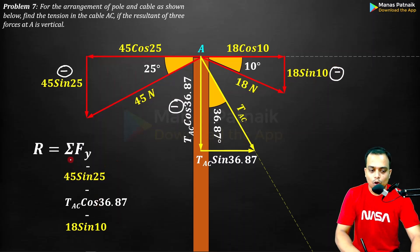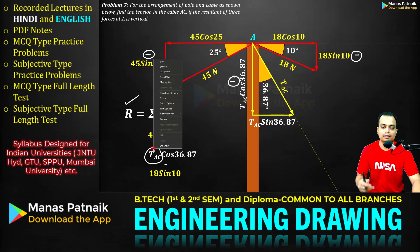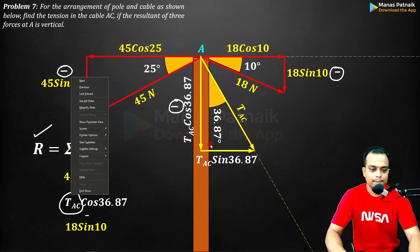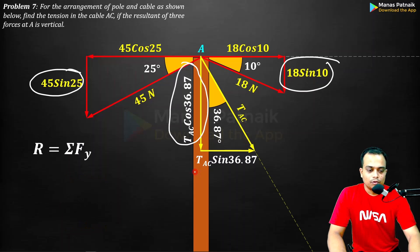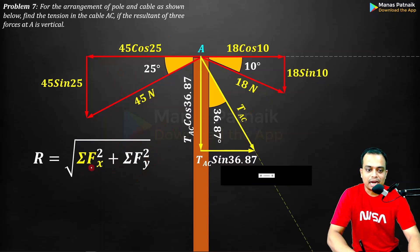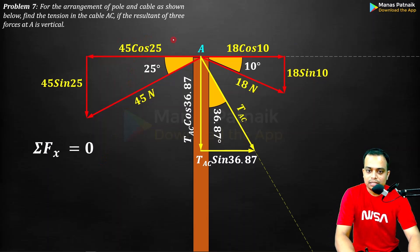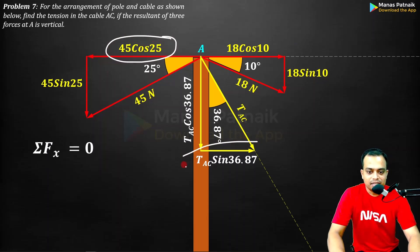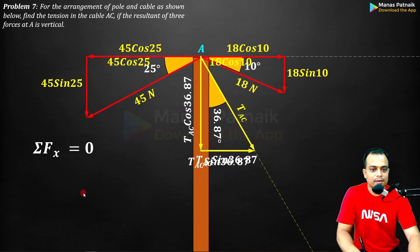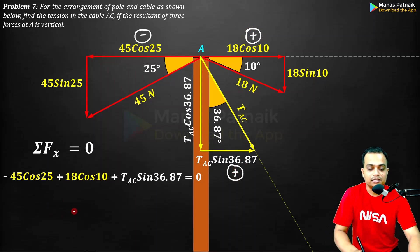We have the resultant equation but still need TAC. Using the condition ΣFx = 0, along the x-direction we have three forces: 45·cos(25°), TAC·sin(36.87°), and 18·cos(10°). The 45·cos(25°) component is to the left (negative), while TAC·sin(36.87°) and 18·cos(10°) are to the right (positive). Setting their sum equal to zero gives us one equation with one unknown.